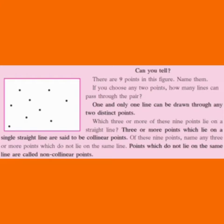Of these nine points, name any three or more points which do not lie on the same line. The points which do not lie on the same line are called non-collinear points.